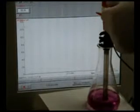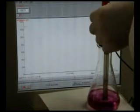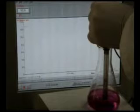The flask is placed on a stirrer while the probe monitors the pH changes during the titration. The titration curve is plotted on the screen in the background.